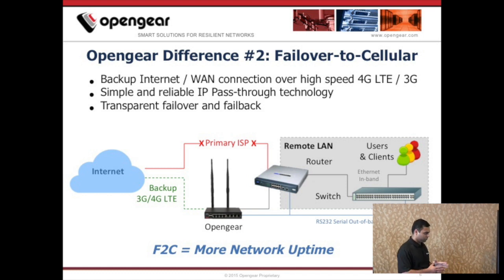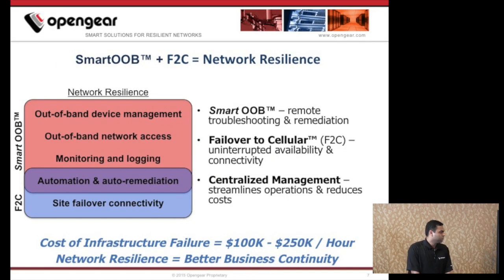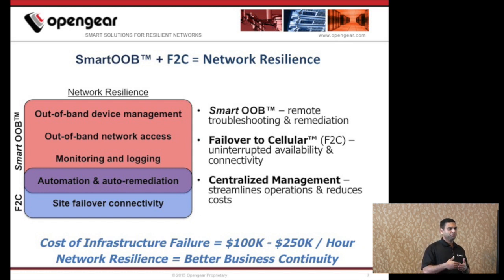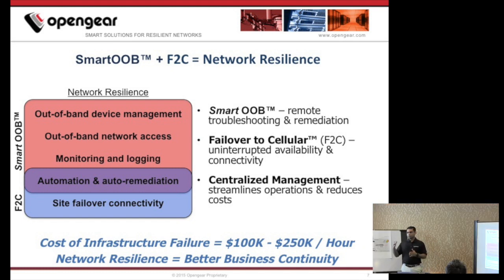Failover to cellular, or F2C for short, means more network uptime — your remote sites and branch offices are connected to your WAN more. And when you combine Smart Out-of-Band and failover to cellular, you get what we call network resilience: the ability to not only prevent certain network failures, but also, if you have an IT infrastructure failure, to remediate the problem and get your network and business operations back to normal — many times within minutes, not hours or days. As the cost of IT infrastructure failure increases, network resilience is becoming more and more critical for better business continuity.